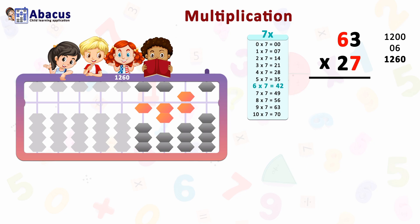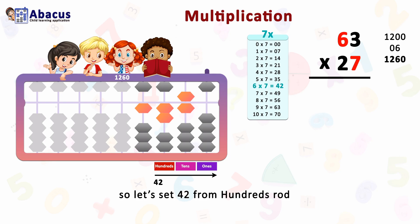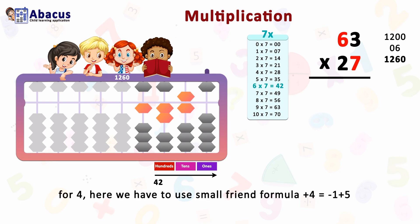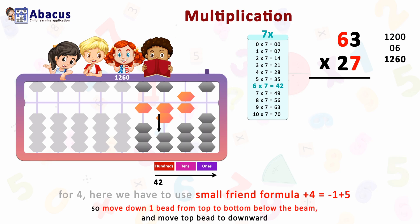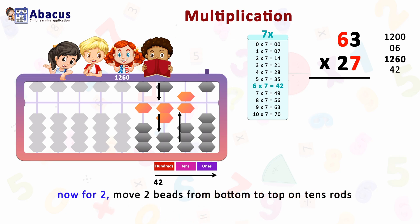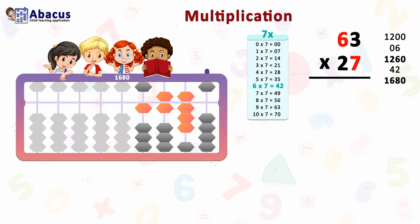The third step is 6 times 7 equals 42. A three-digit calculation remains — 6, 3, and 7 — so we stay on the same hundreds rod. To set 4 on the hundreds rod, we use the small friend formula: plus 4 equals minus 1 plus 5. Move one bead down from top to bottom and move the top bead downward. For 2, move two beads from bottom to top on the tens rod. Now we have 1680.